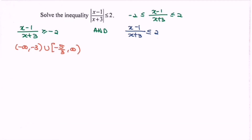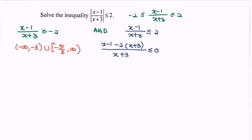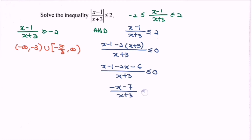Next we discuss the right hand side. Transfer the 2 from the right to the left, then equate the denominator: x minus 1 minus 2 multiplied by x plus 3 over x plus 3, less than or equals to 0. Expanding and simplifying: x minus 1 minus 2x minus 6 over x plus 3 less than or equals to 0. Finally we have negative x minus 7 over x plus 3 less than or equals to 0.